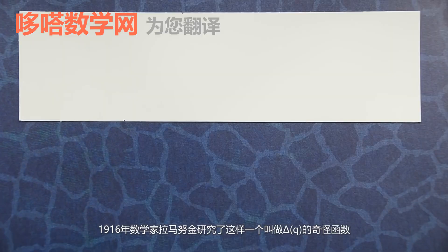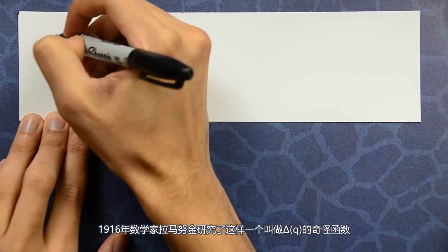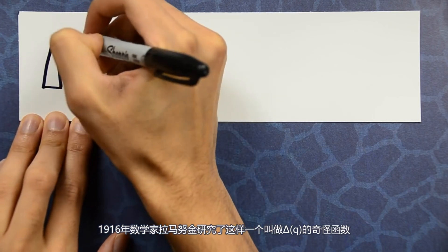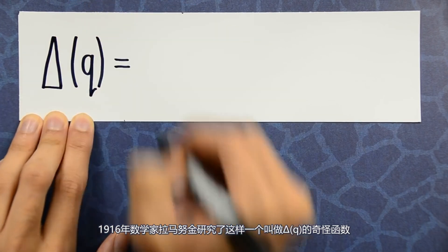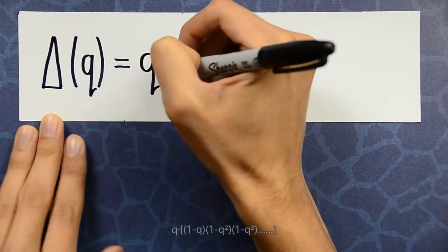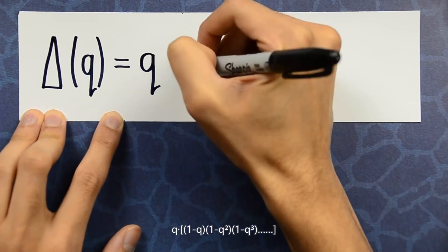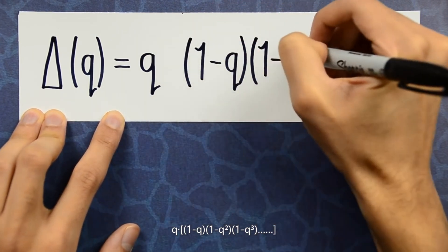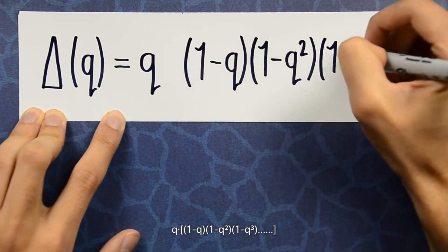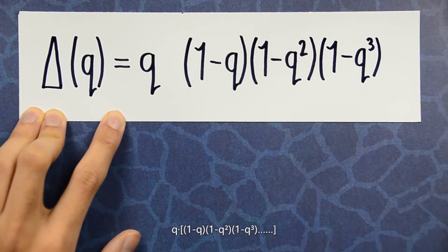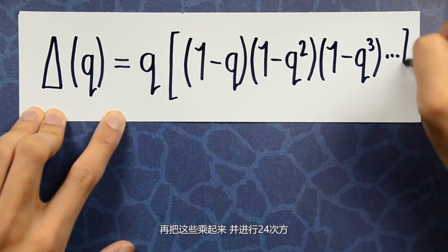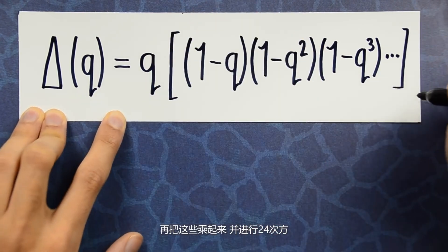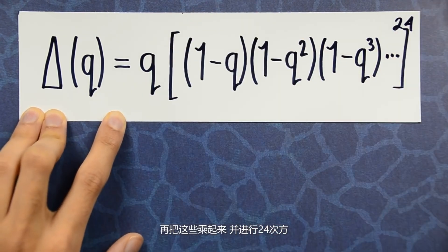In 1916, the mathematician Ramanujan looked at the following very strange function, which he called delta of q: q times (1 minus q) times (1 minus q squared) times (1 minus q cubed), and on and on — all of this raised to the 24th power.